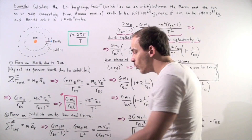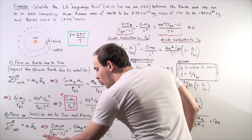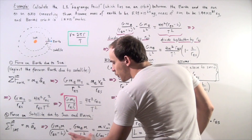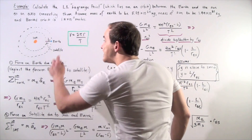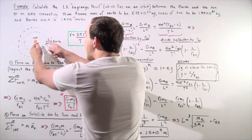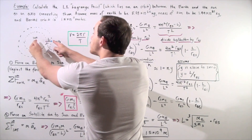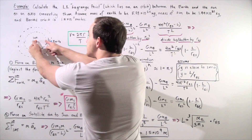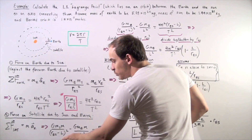The sum of all forces acting on the satellite equals the mass of the satellite m multiplied by its radial acceleration. We write our two force terms — the force due to the Sun and the force due to the Earth. Notice the radius of the satellite's orbit is given by taking our radius of the Earth's orbit and subtracting the distance L.